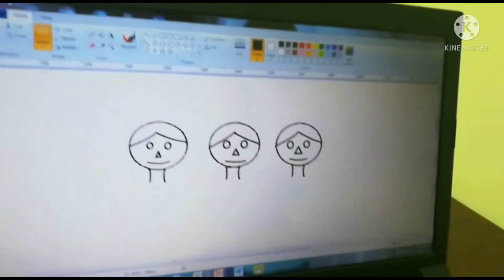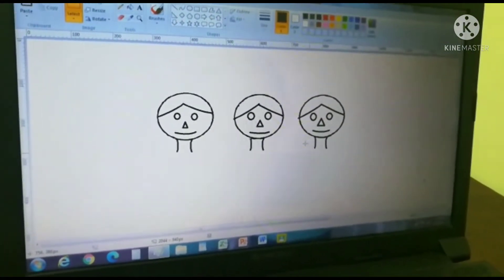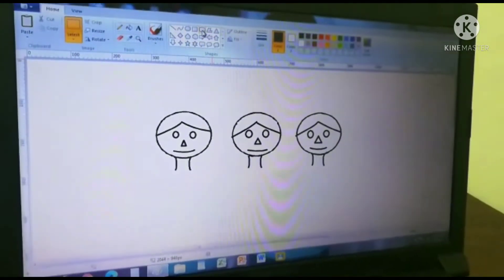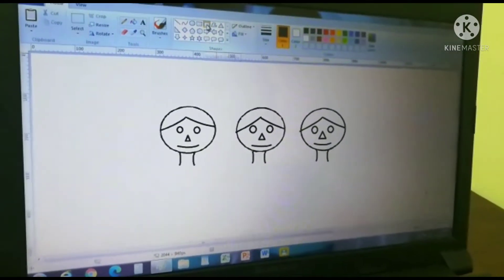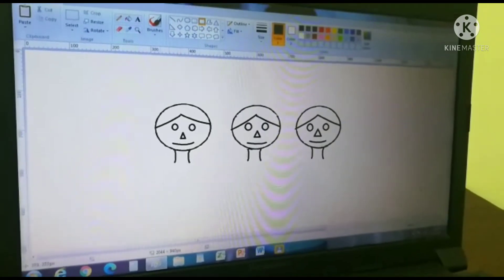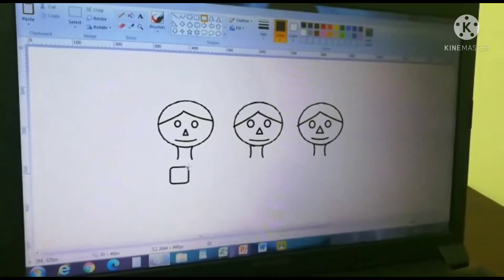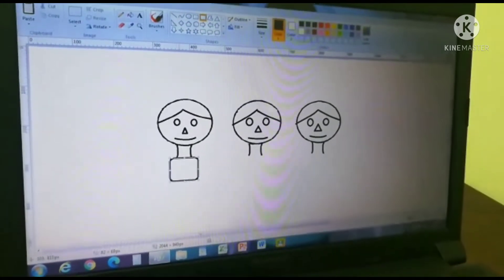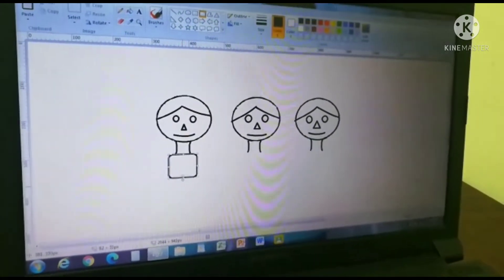Now we draw for the three faces the neck. Now we are going to draw the body. Take square, not square take this shape. It will be a little small.